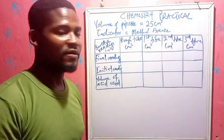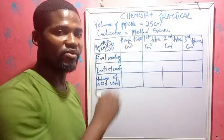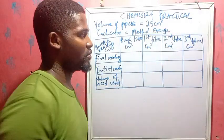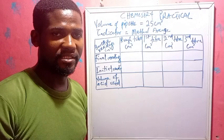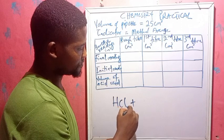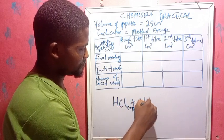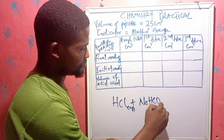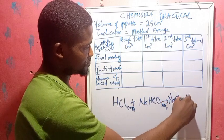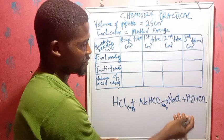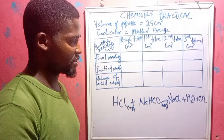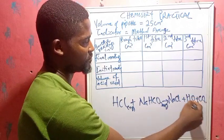Now, in chemistry practical, the volume of pipette we use is usually 25 cm³. We are using methyl orange as indicator because we are dealing with a strong acid and a weak base. We can put up the equation here. Note: don't include the states of matter — they were omitted here because of space.